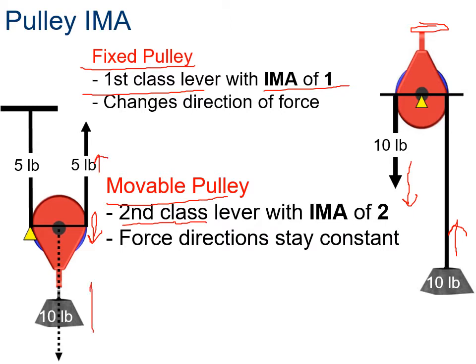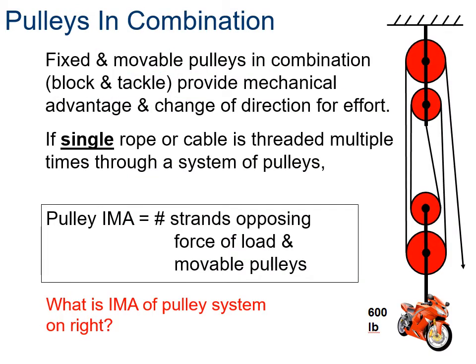This example of a system of pulleys is called a block and tackle, where you've got some fixed pulleys and movable pulleys. They provide mechanical advantage as well as change the direction. We've got a single rope or cable threaded multiple times, and the pulley IMA can be calculated by counting the number of strands that are opposing the force of the load.